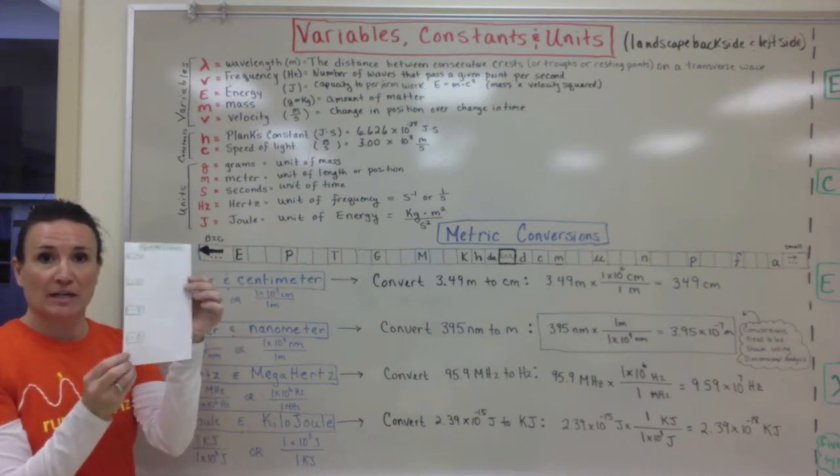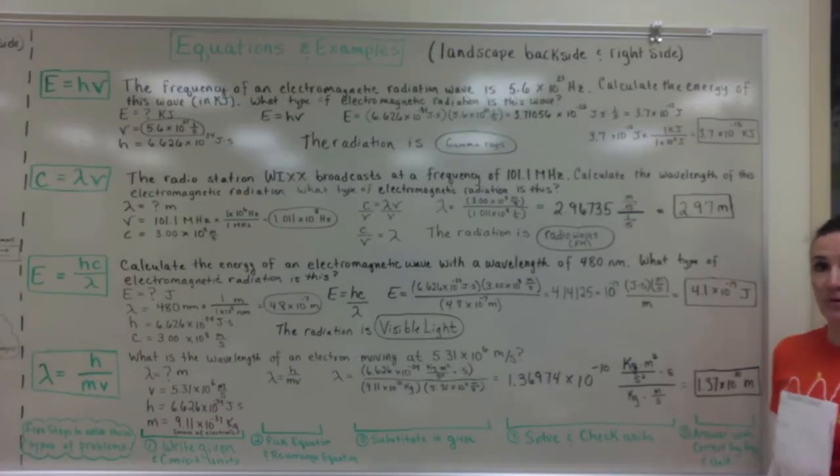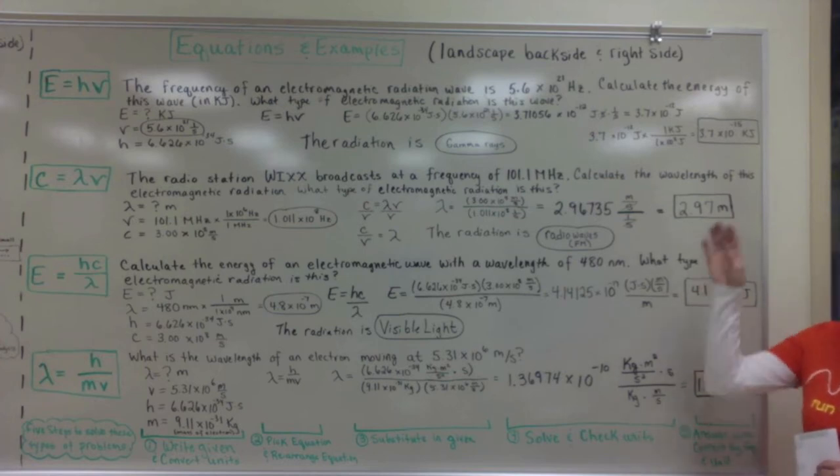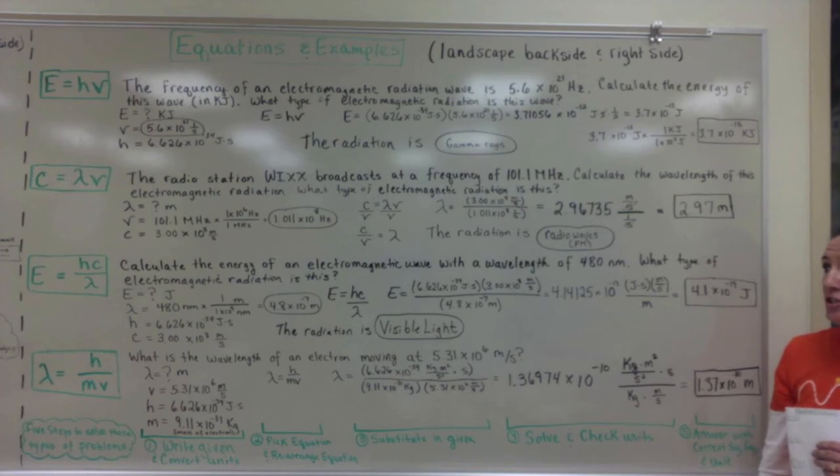The other part of the back side are the equations and examples. These are those equations and examples and these go on the other half of the back side. And you'll want to work through four different types of calculations that relate to energy, frequency, and speed of light.